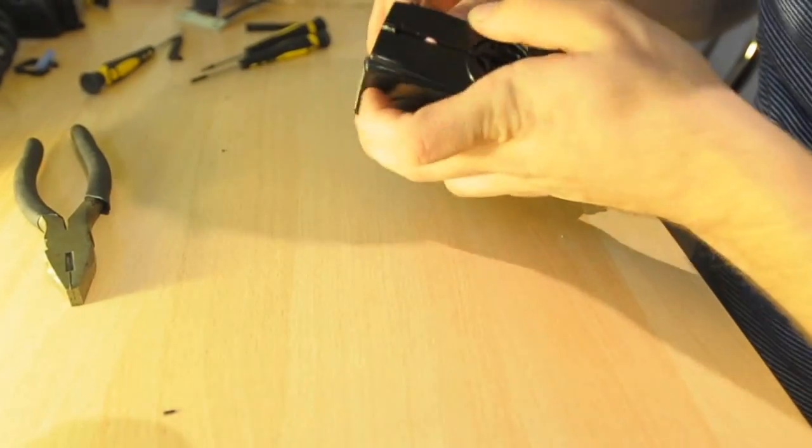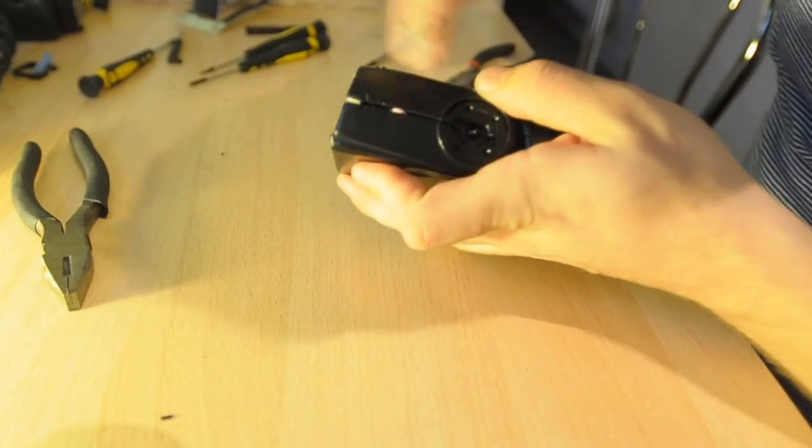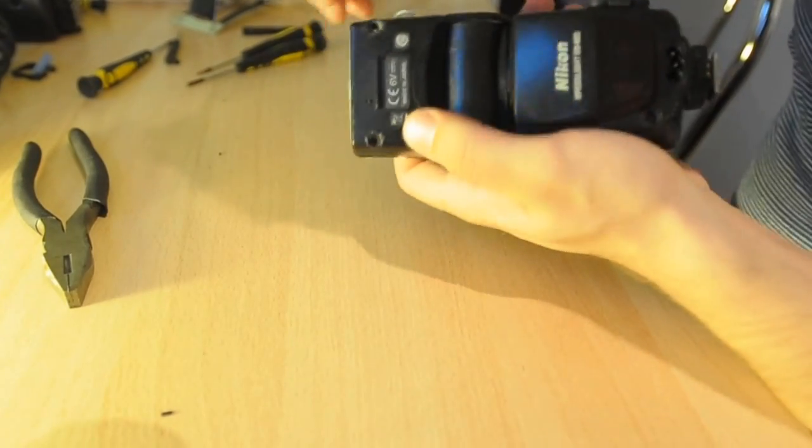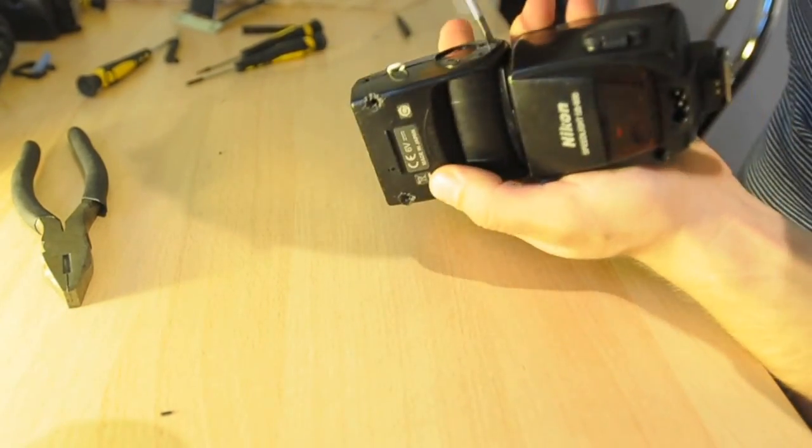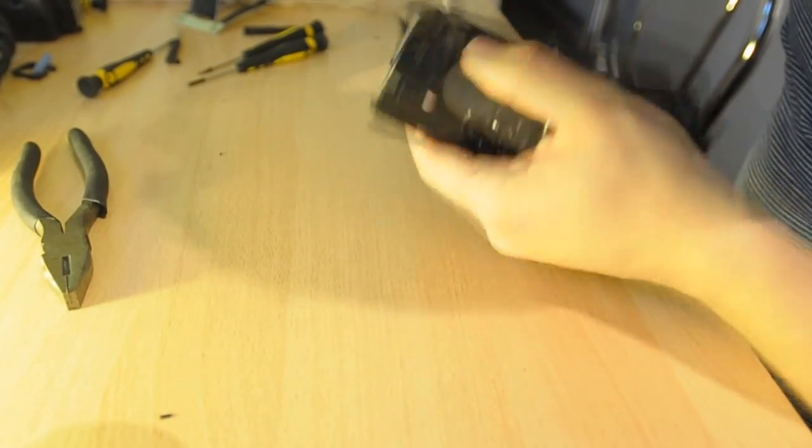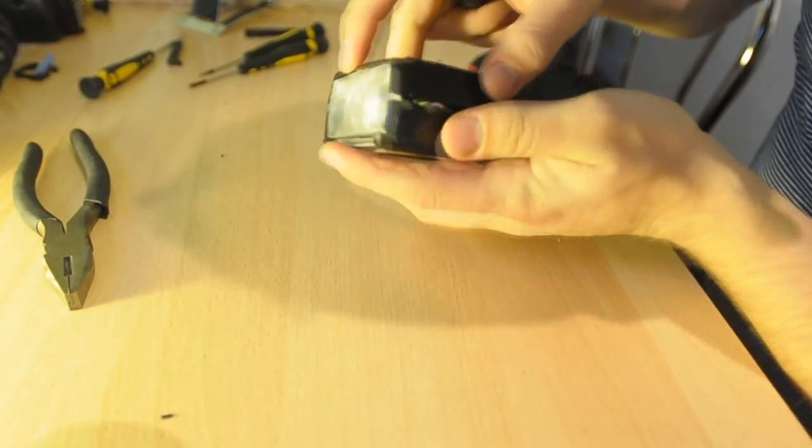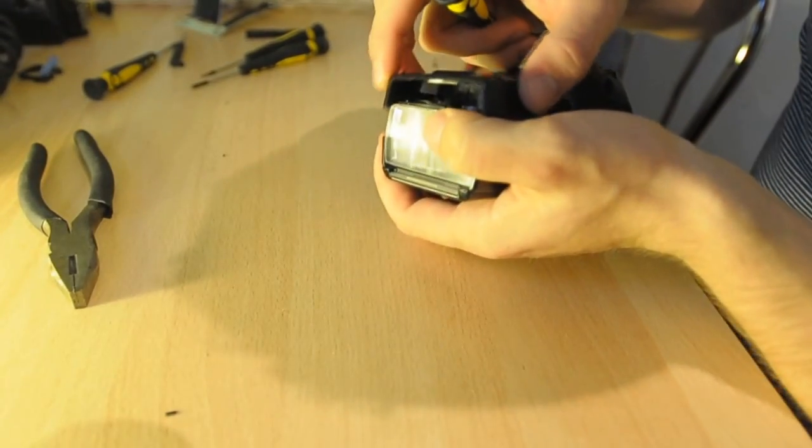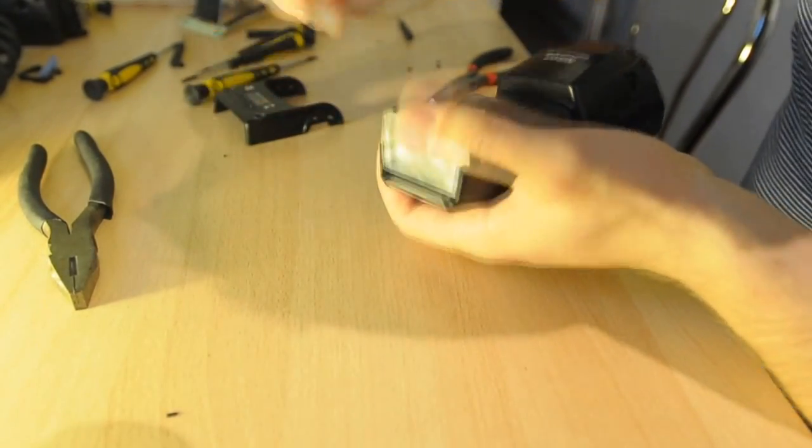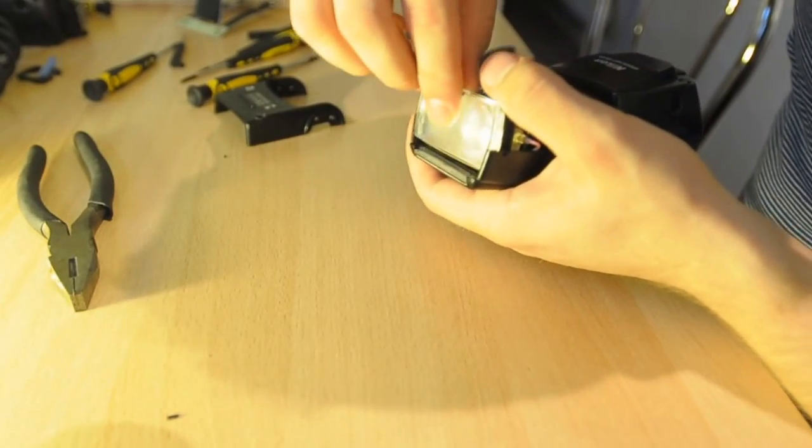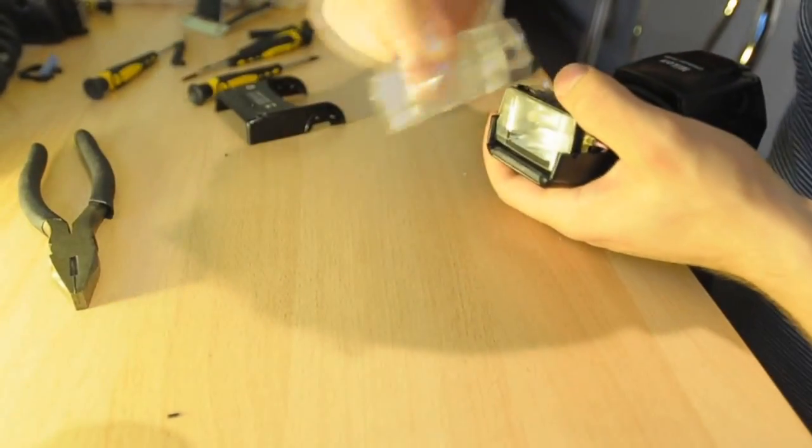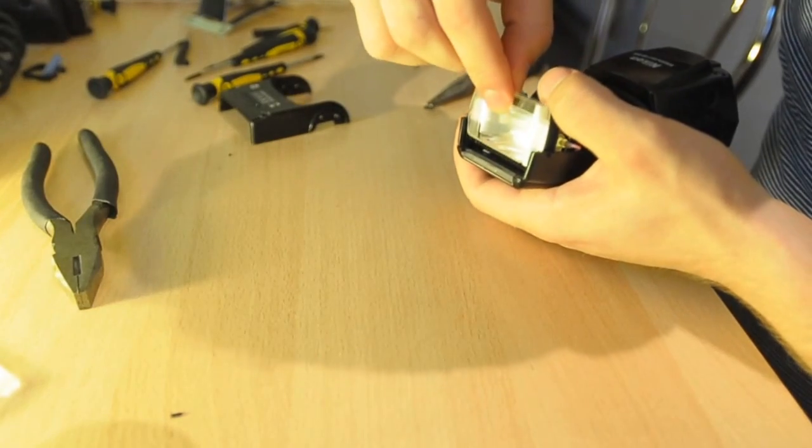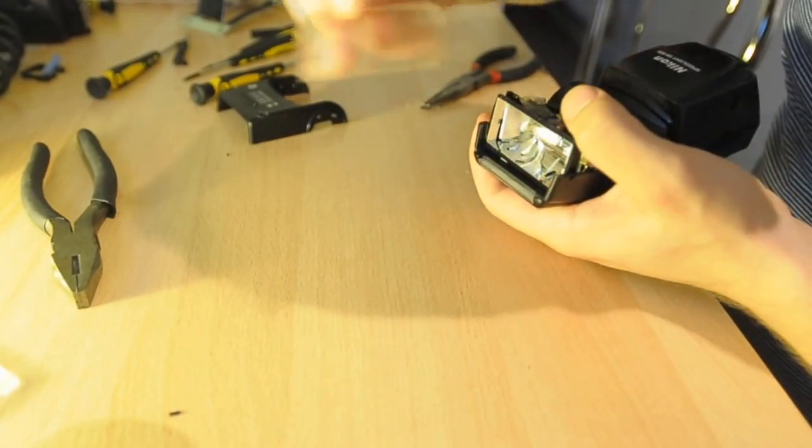So once you've got the screws out from each side and from the top as well, the whole part should come off gently. Then you can remove the glass, the front one, that one there, and then there's another piece of glass as well which comes out, which is that one here.